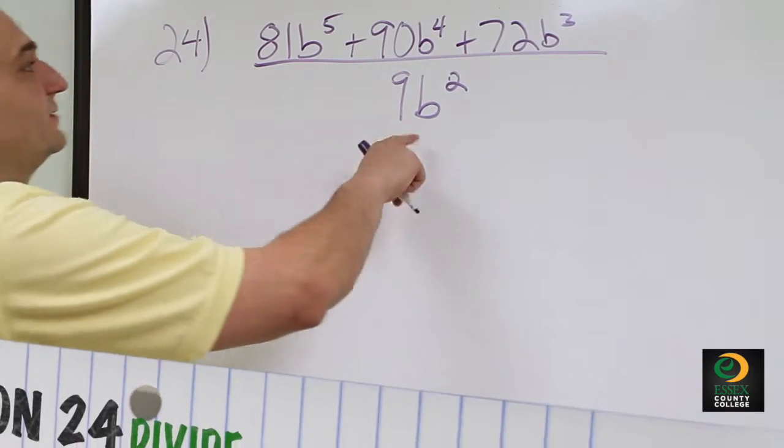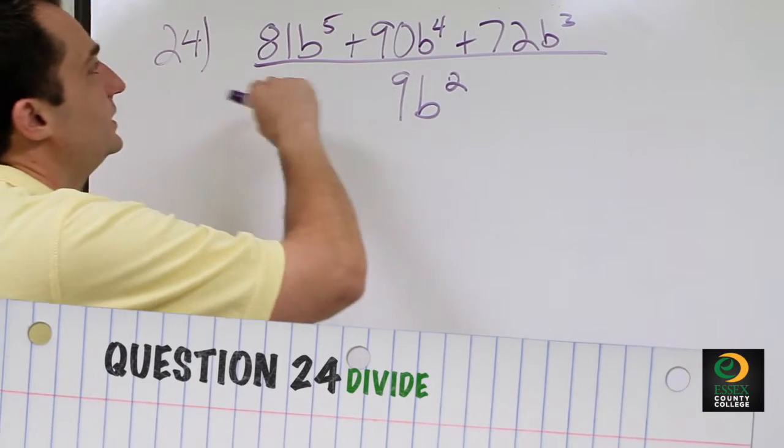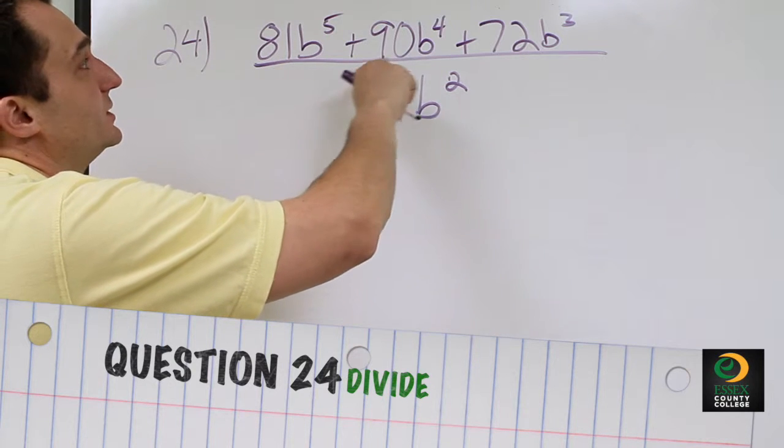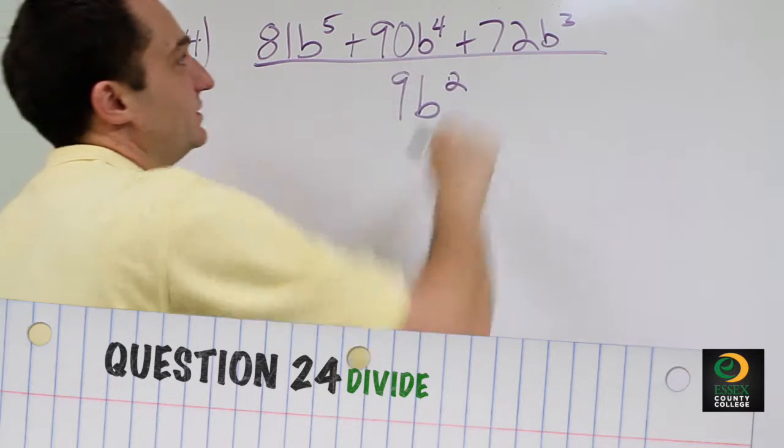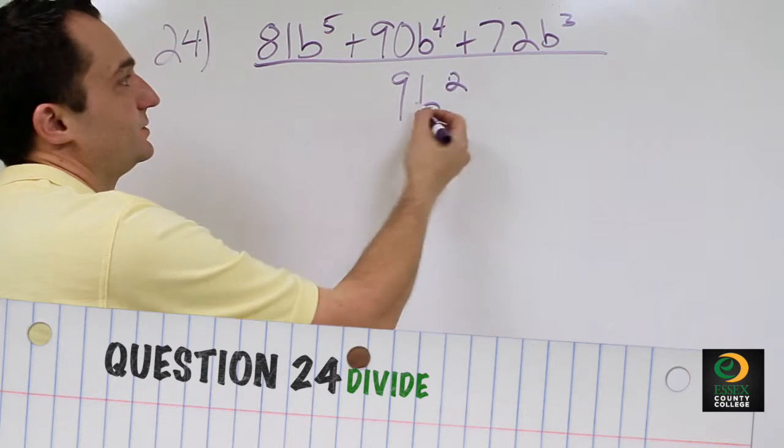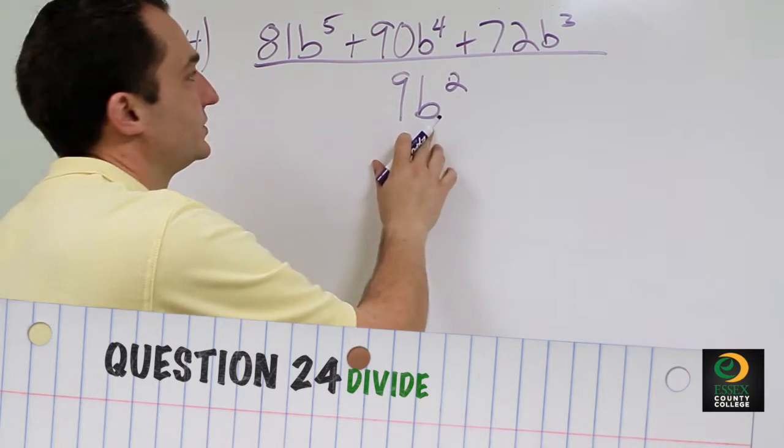Problem number 24 asks us to divide 9B² into 81B⁵ + 90B⁴ + 72B³. Since there's only one term on the bottom and it's multiplied together, we can split each of the top parts up.